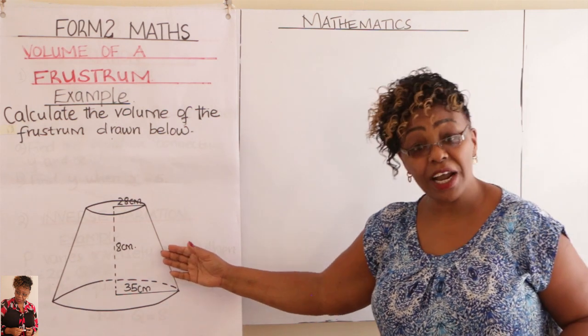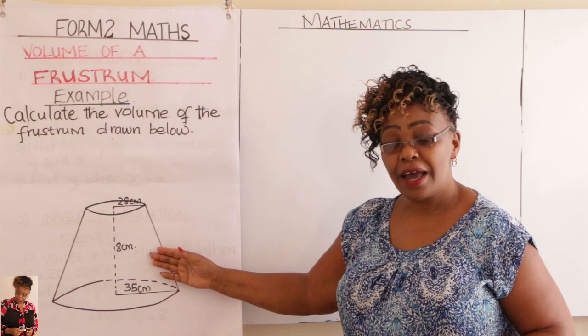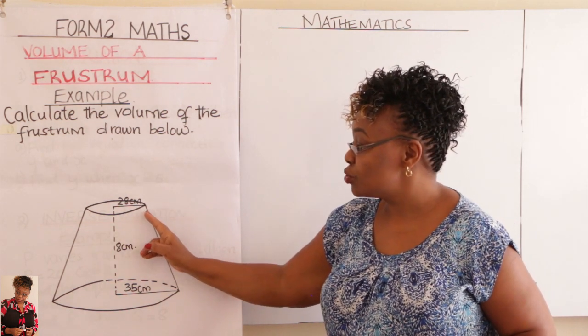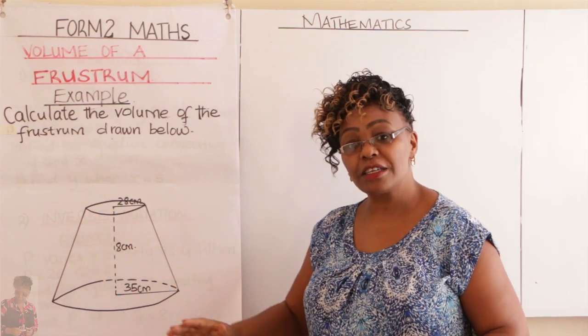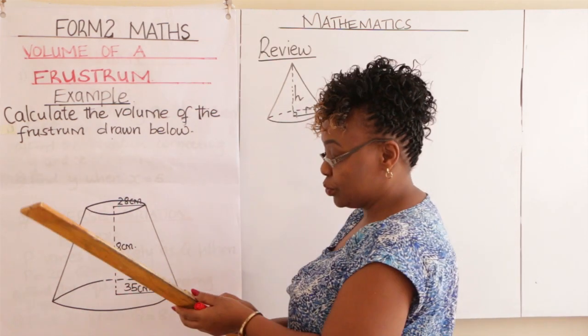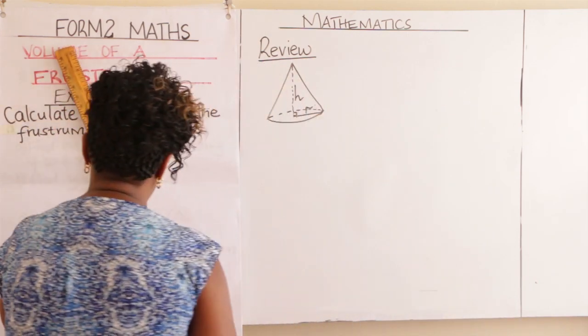Learner, this frustum is got from a cone and therefore the first thing that you do is that you produce this line, you produce this other line so that you form the original cone. It's a matter of producing the sides of the frustum.